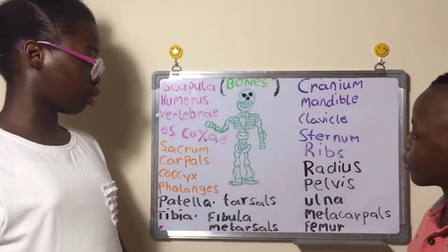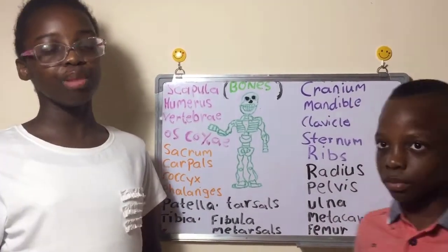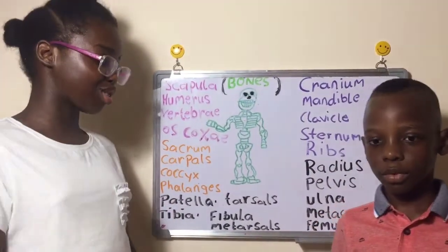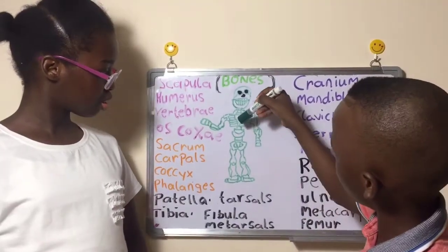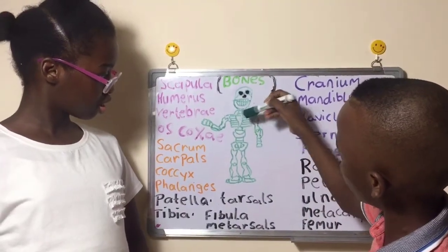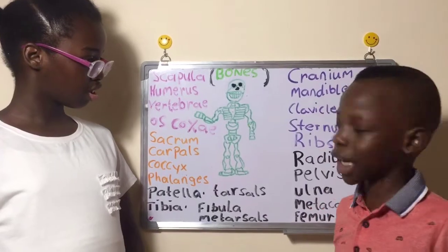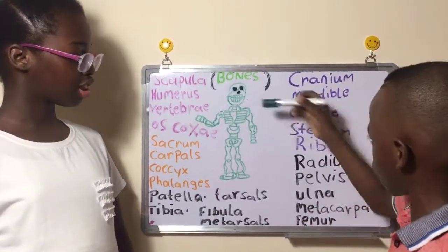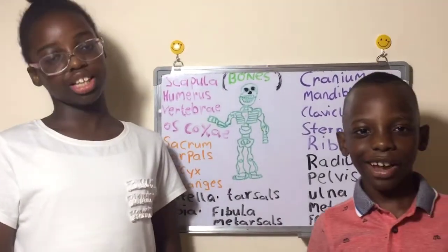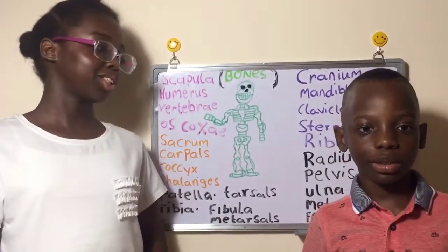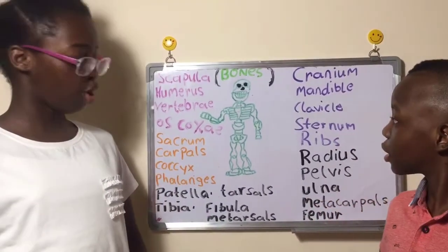Then there are the ribs, which have the true ribs and the false ribs. The false ribs are the ribs below and the true ribs are the ribs on top. It's not like one of them says the truth and the other says false — it's just what scientists call them.